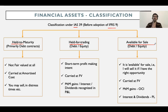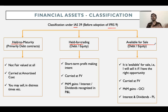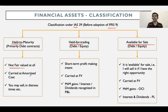Held to maturity — like the name suggests, these are financial assets which you intend to hold up to their maturity. You have purchased a debt instrument today with an intent to hold it up to its maturity, which is let's say five, seven, or ten years from today. You are not typically bothered about the fair value fluctuations that happen in between.